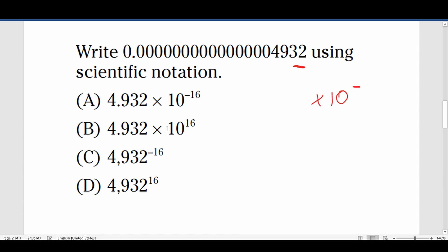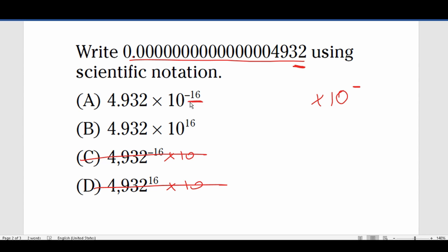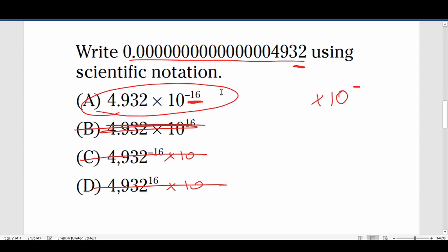Now we just look at our answer choices and see which one's correct. This one doesn't have base 10 — not correct. This one doesn't have base 10 — not correct. We know it's a very small number so the exponent is negative. So without doing any work, we're able to solve this problem. Especially early on in the ASVAB, there are going to be problems you can solve without doing any work, which will free up time for harder problems later in the test.